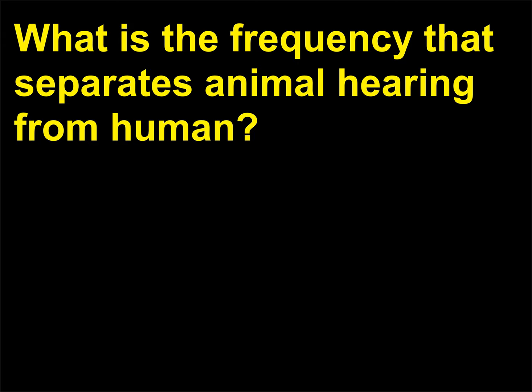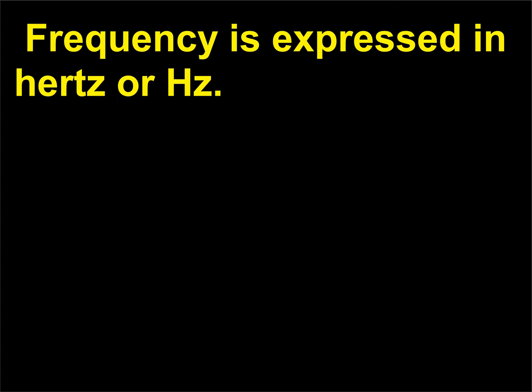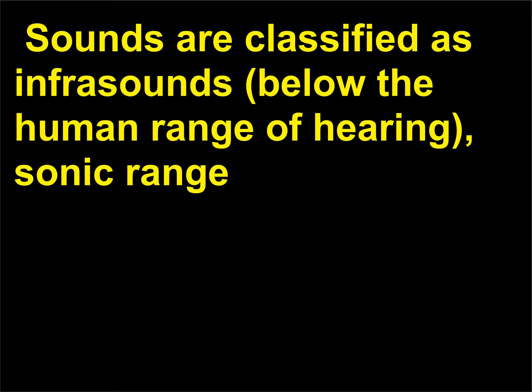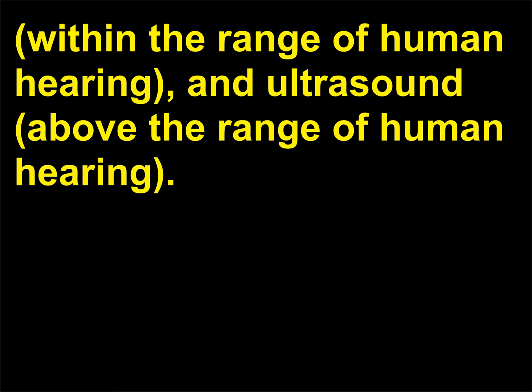What is the frequency that separates animal hearing from human? The frequency of a sound is the pitch. The frequency is expressed in hertz. Sounds are classified as infrasounds, below the human range of hearing; sonic range, within the range of human hearing; and ultrasound, above the range of human hearing.